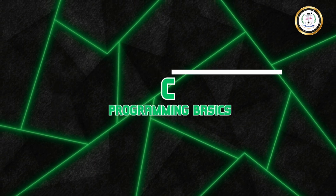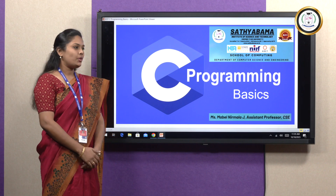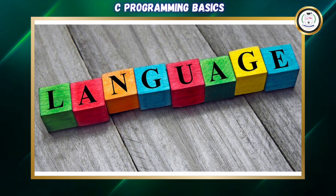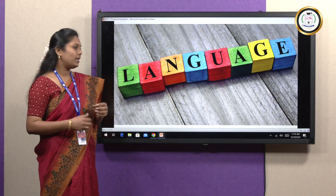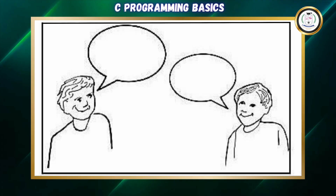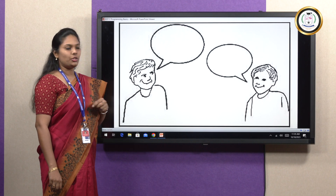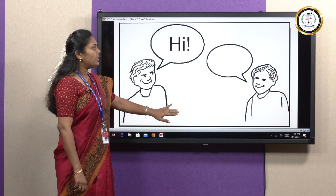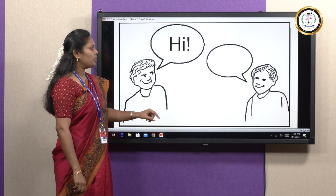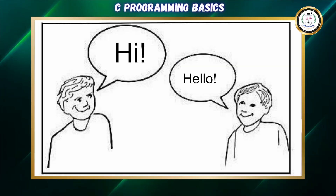I'll be covering the introduction of C Programming Language. As we all know, the purpose of any language is to communicate between two parties. Two people who intend to communicate with each other use a language that is known by both persons. So if two people know English, they can easily communicate using English. If one person says hi, the other understands and responds by saying hello.